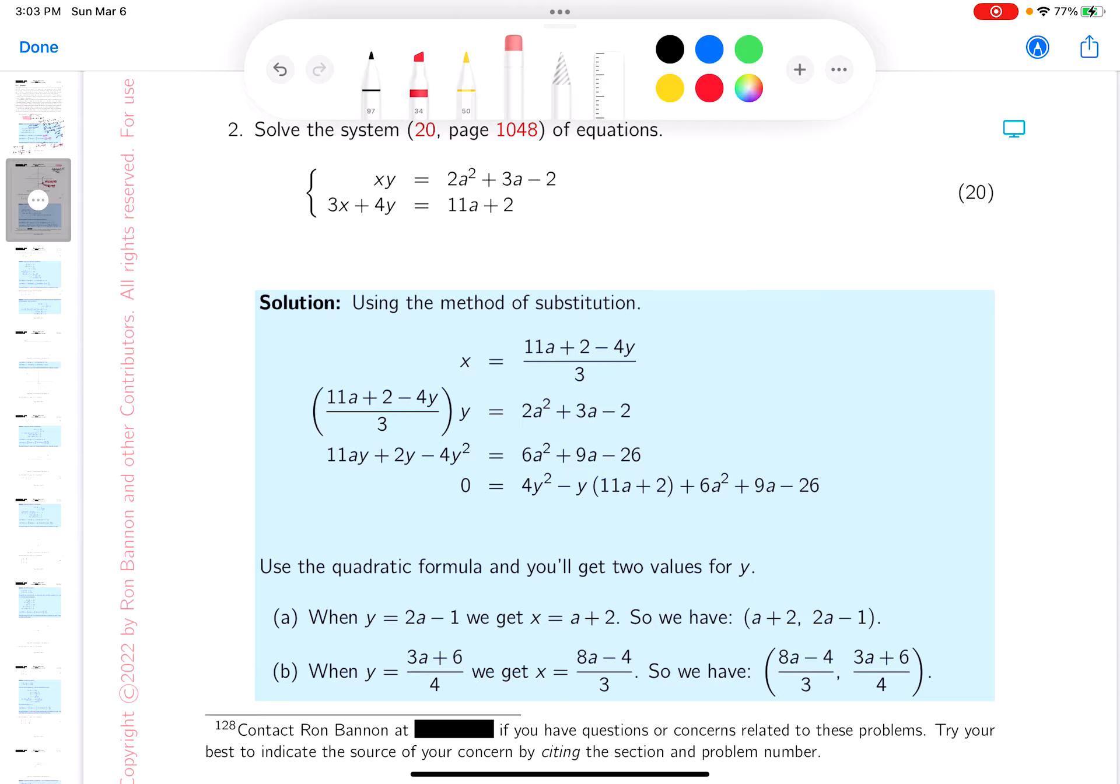Okay, let's start at the beginning, and we're going to use a process of elimination. So what I'm going to do over here is solve this equation here for x. And that's really not so bad to do. That's going to be 11a plus 2 minus 4y over 3. And then I'm going to take this, which is x, and I'm going to pop it into this equation over here.